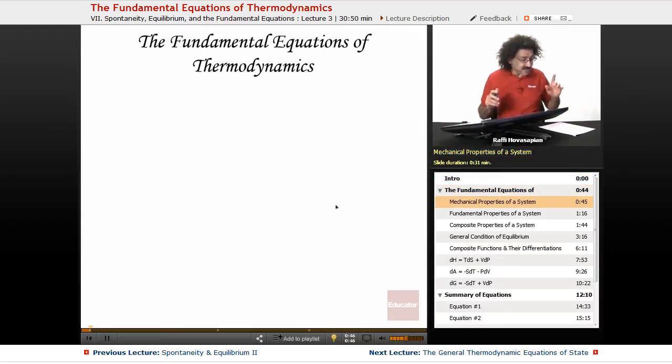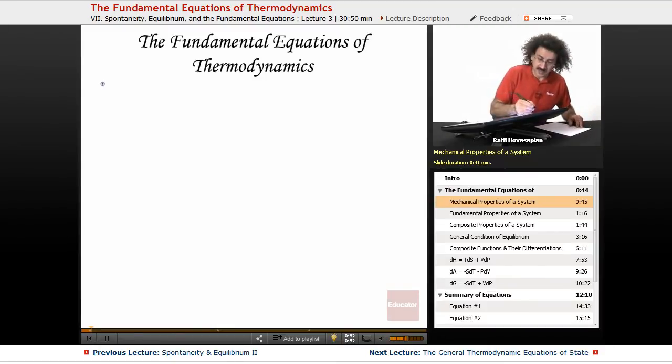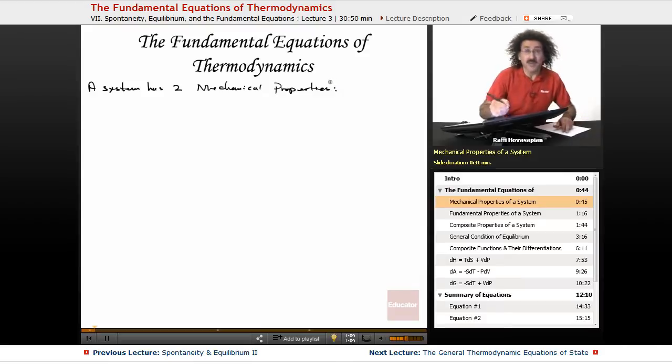A system has two mechanical properties. They are the pressure and the volume, P and V.